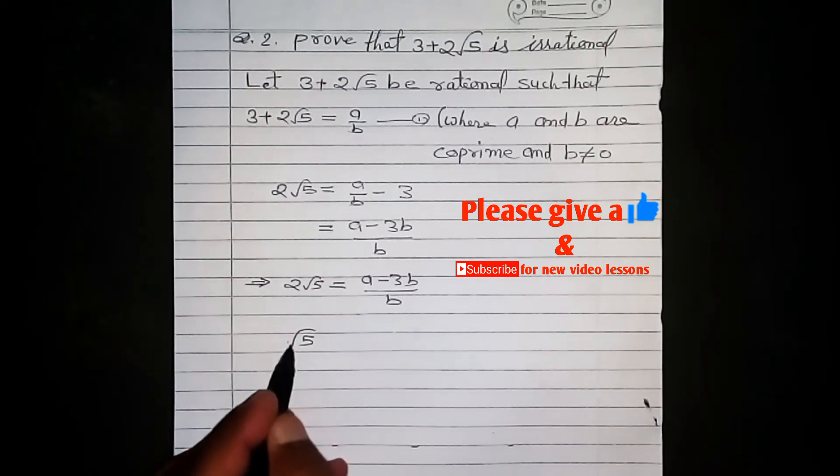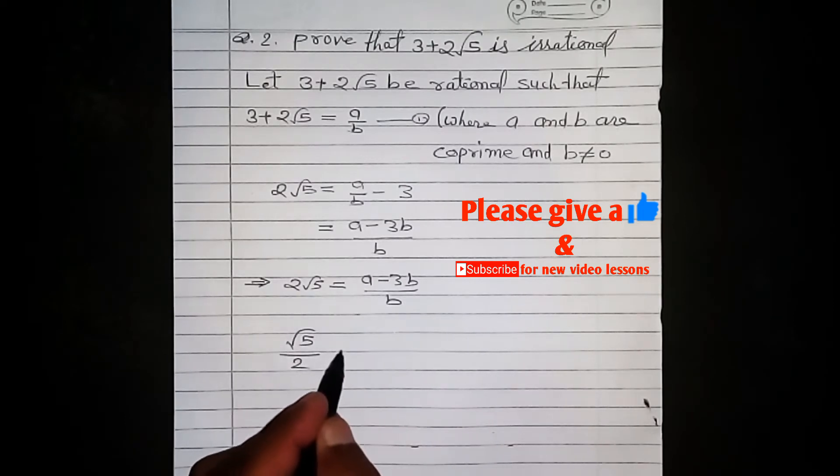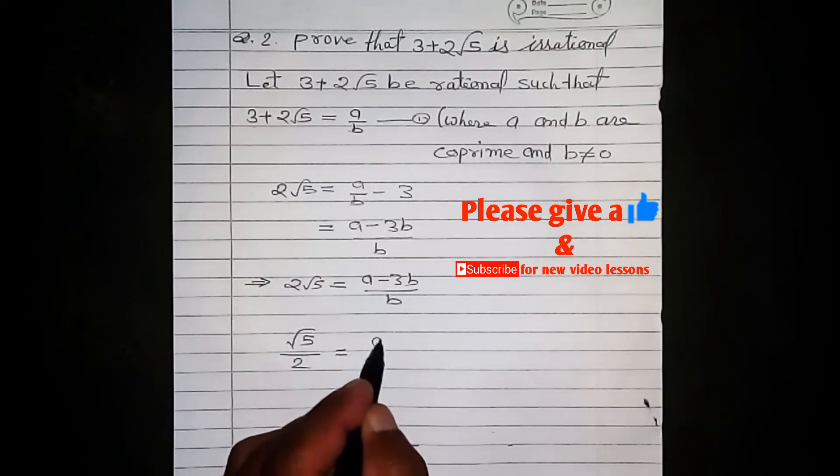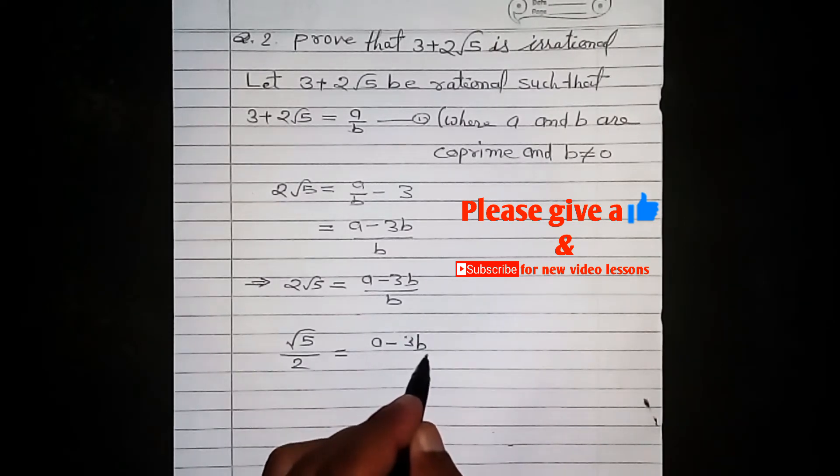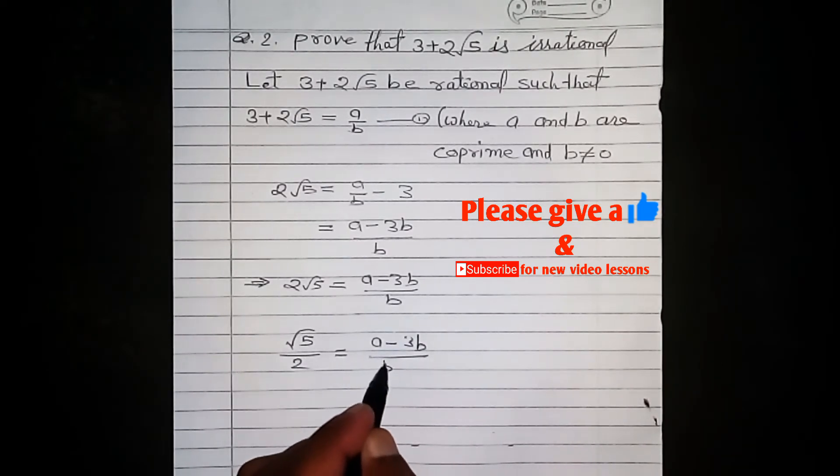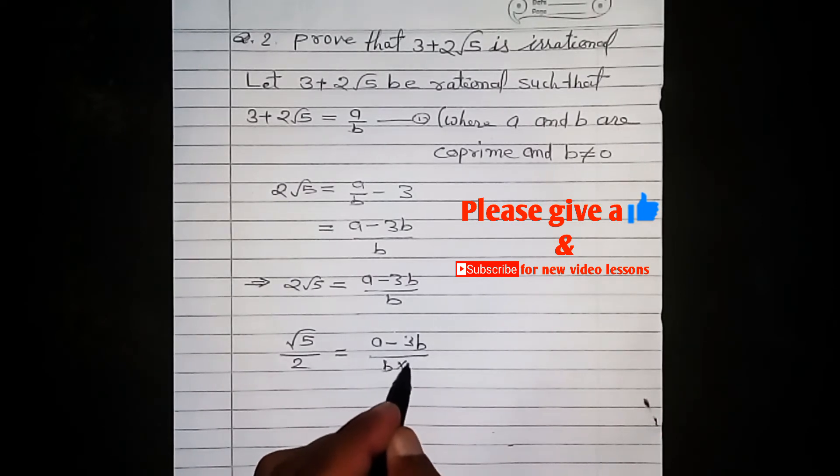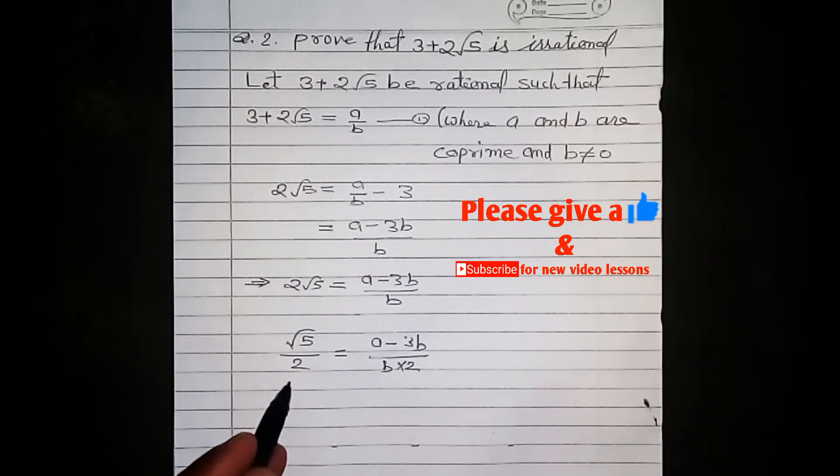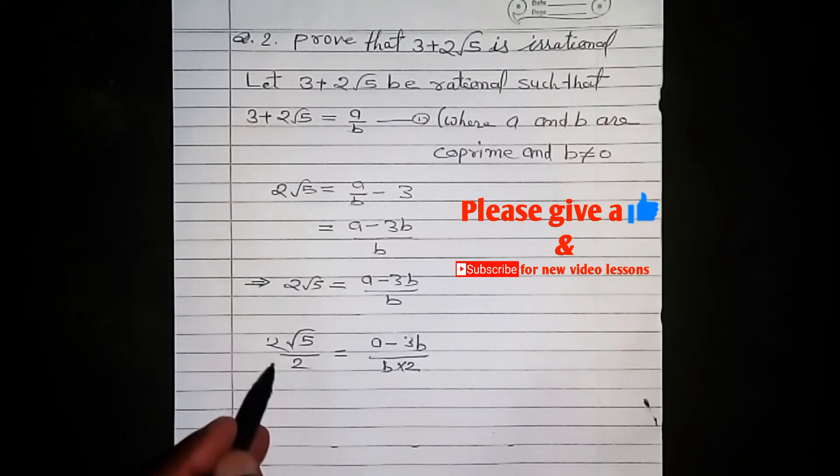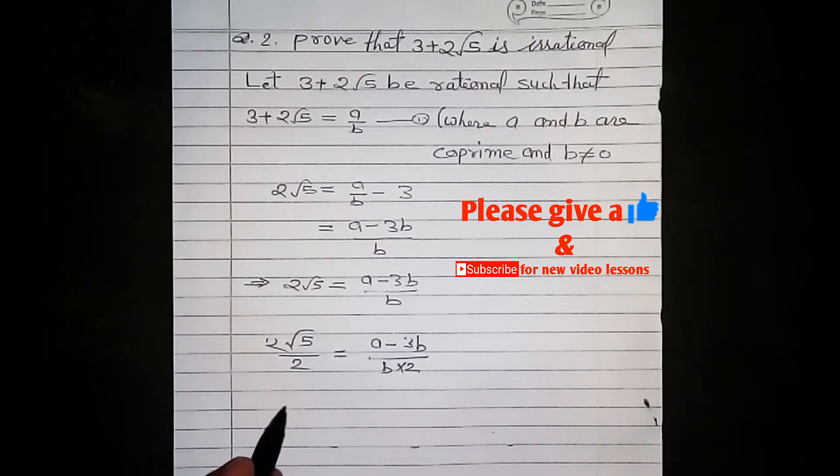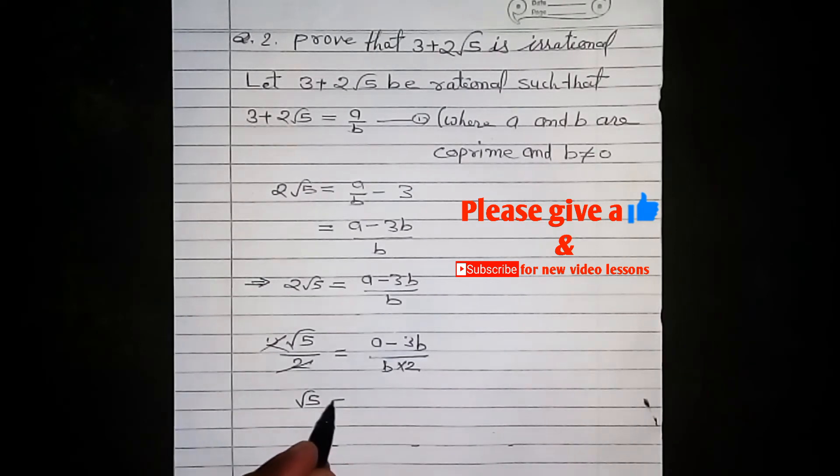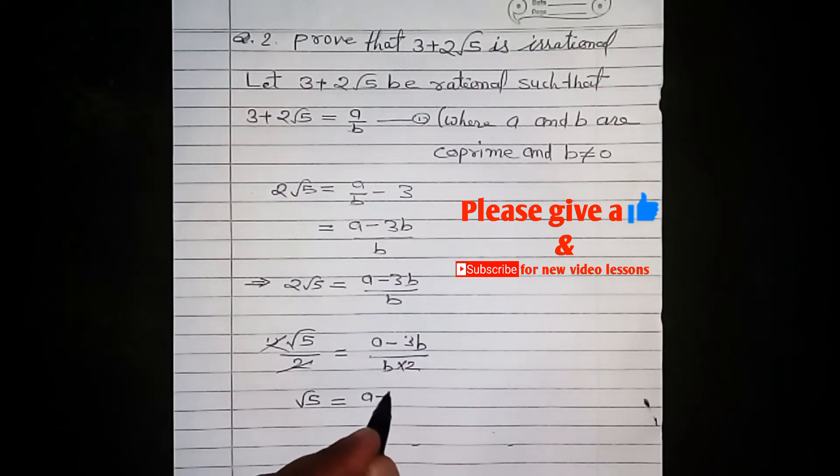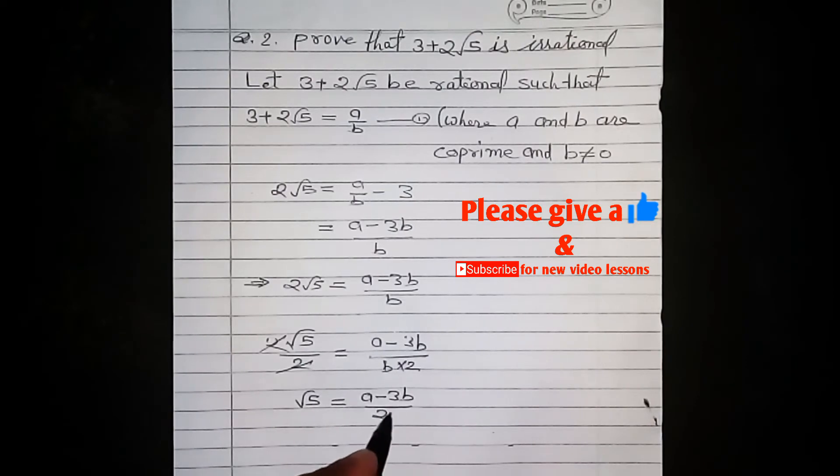Multiplying by 2, we get square root 5 is equal to a minus 3b by 2b.